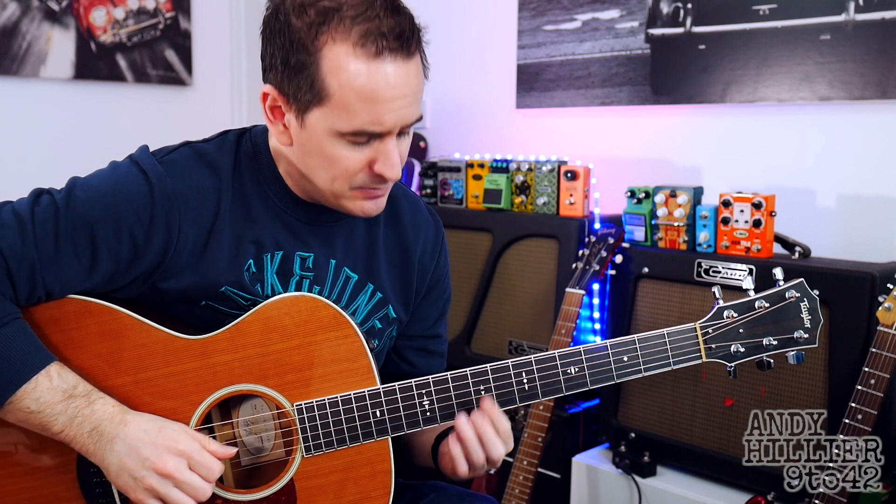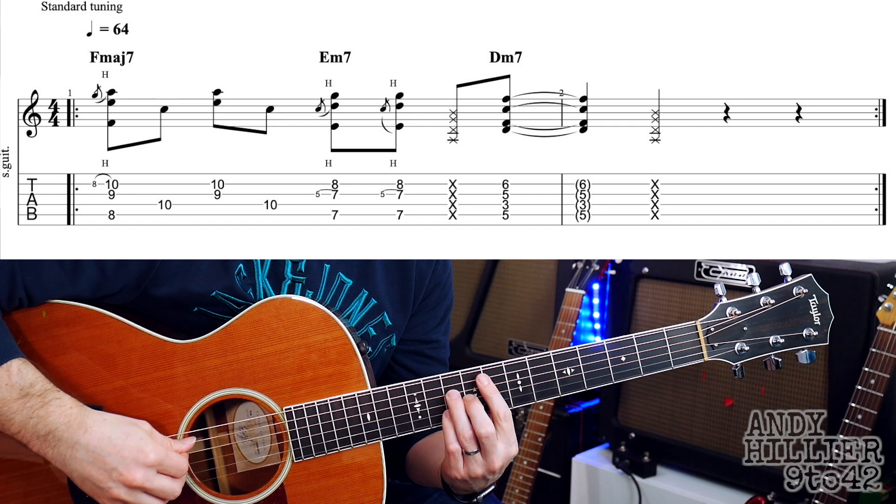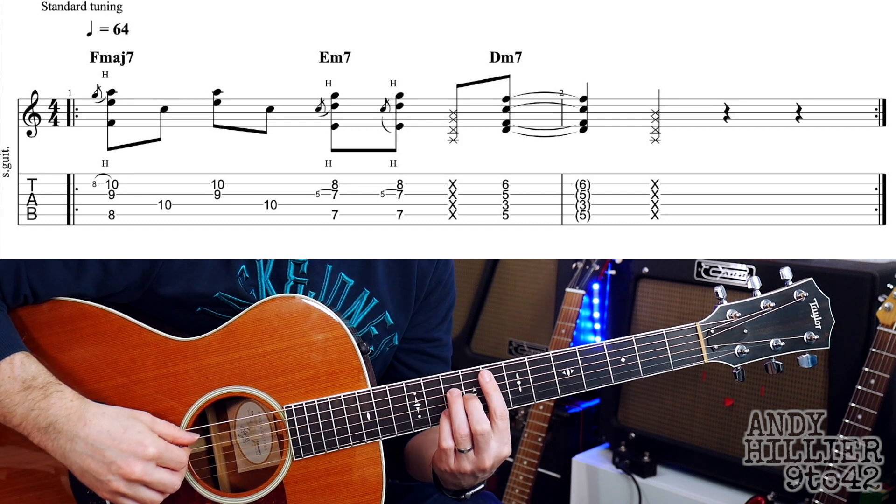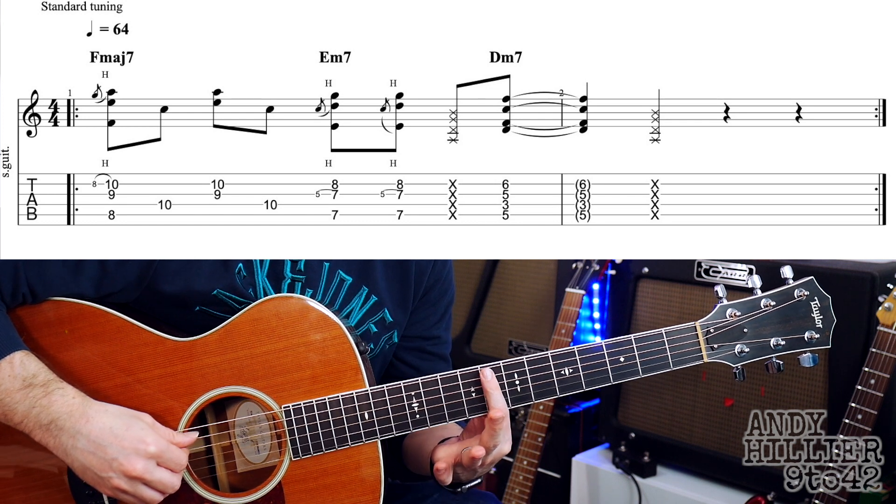Okay, so let's get down to it. It's going to start with a Fmaj7 chord, which is your first finger. We're actually going to bar it from the A string downwards, just because we do this little hammer-on thing we'll see in a sec.